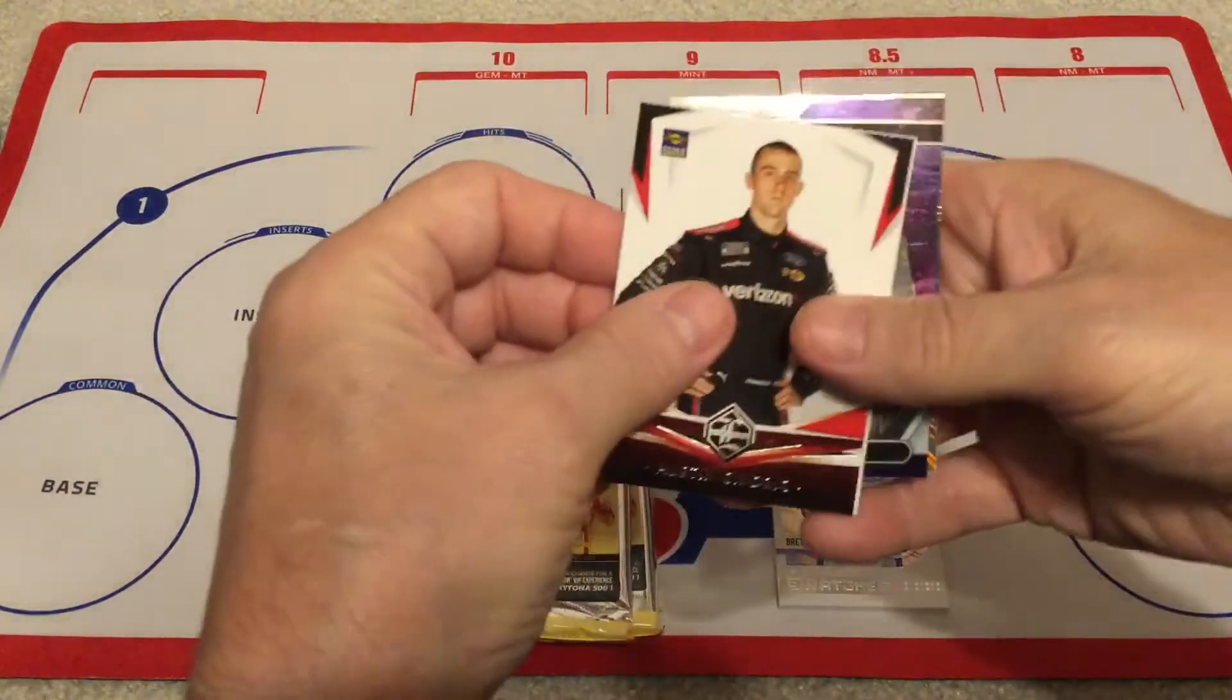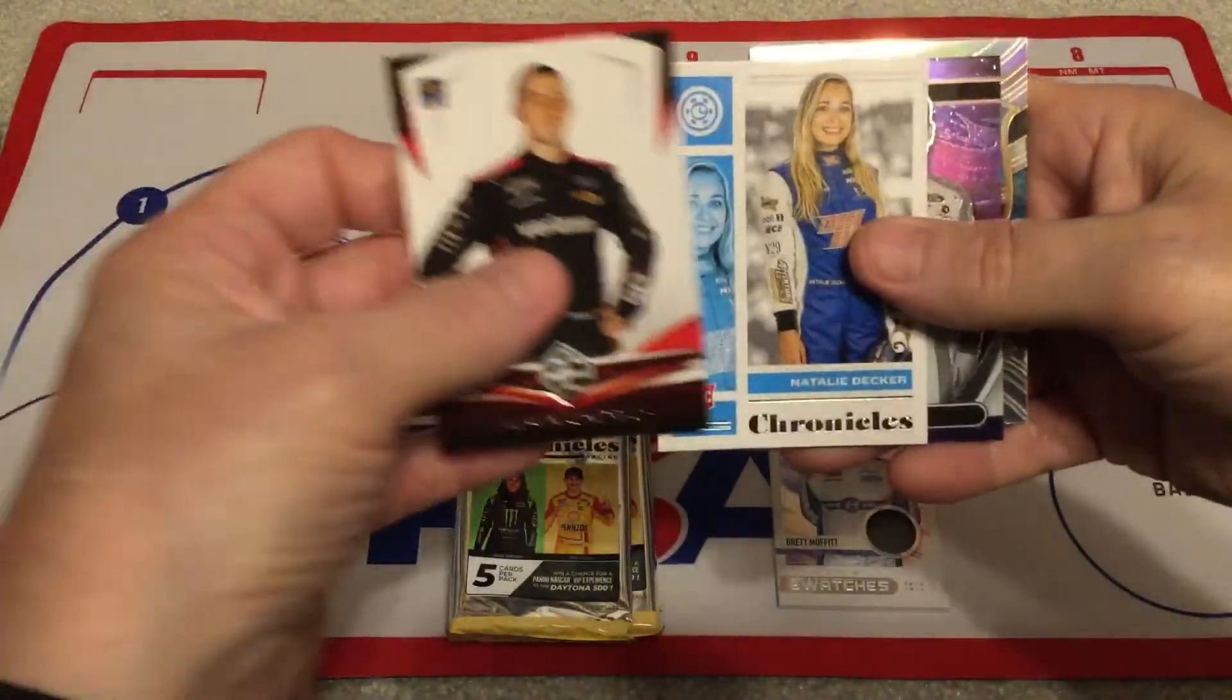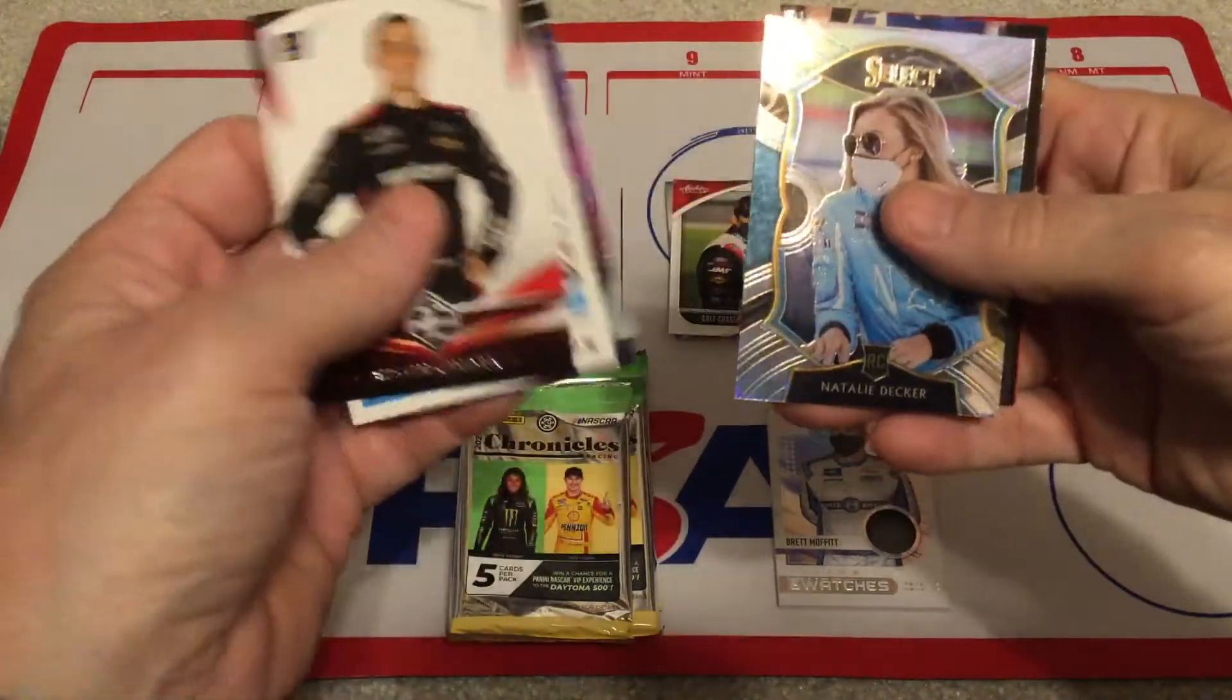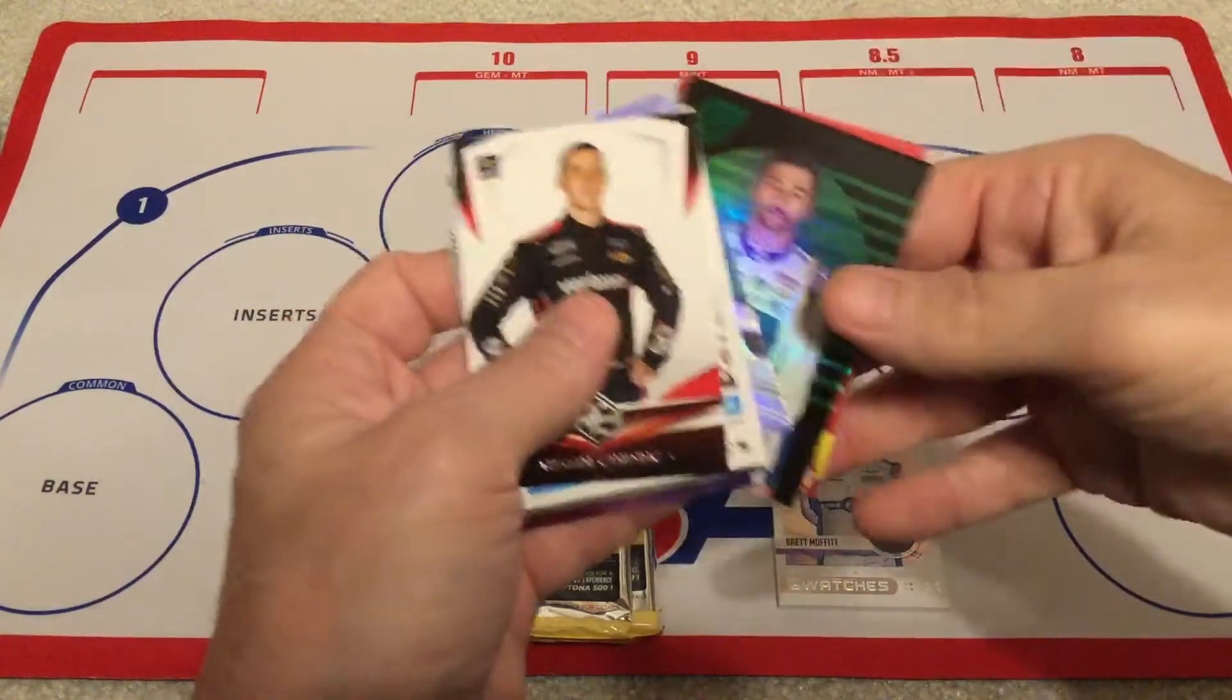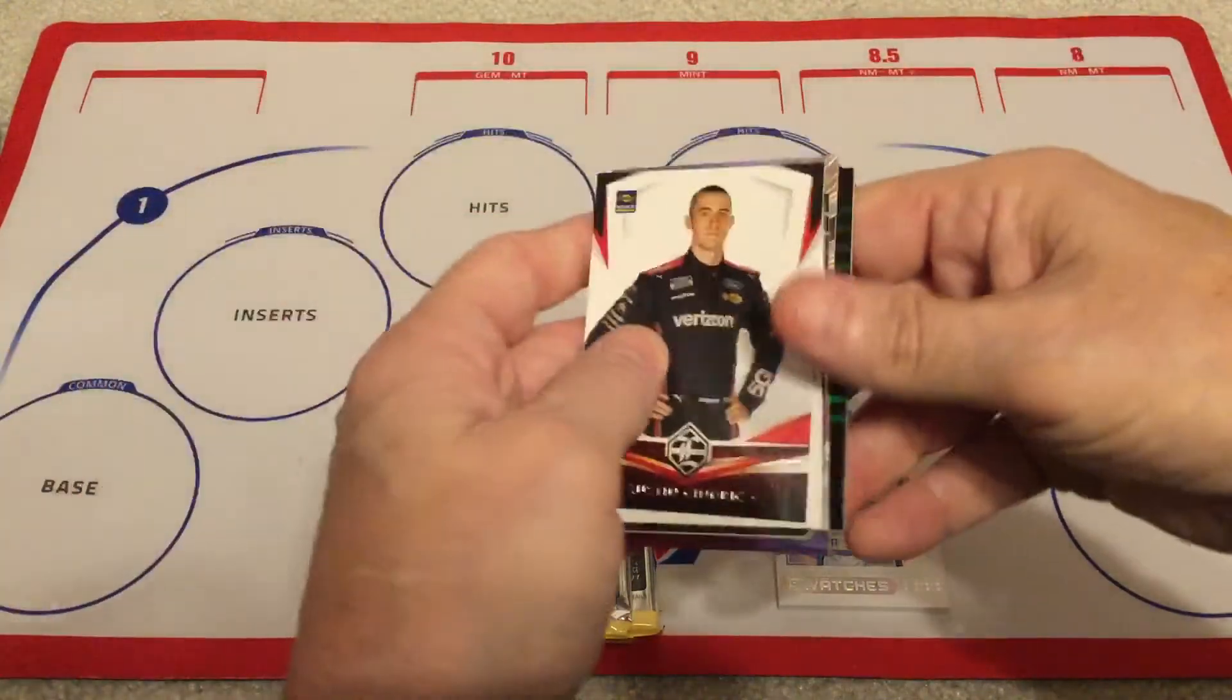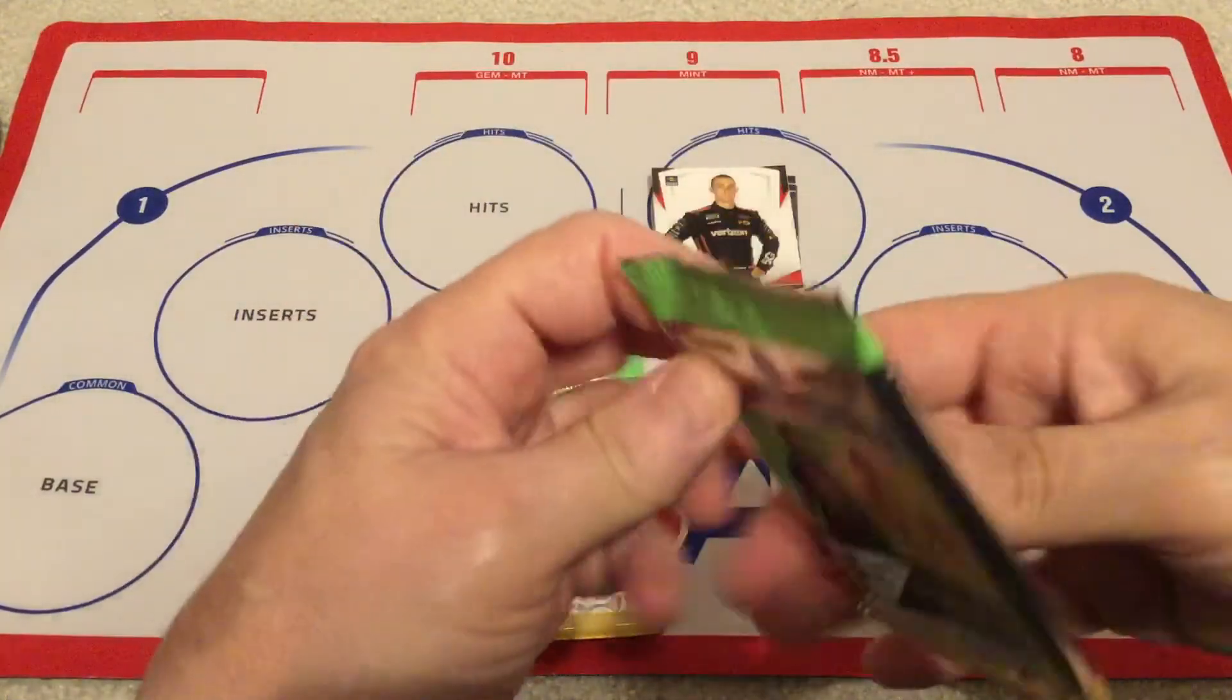All right. Pack number two. Got Austin Sendrick. There's Natalie Decker. There's Joey Logano and Titan. And another Natalie Decker. And a green Chase Elliott. Cool. All right. I like that. That's freaking awesome. All right. That was definitely a Natalie Decker pack. So, we've got two Natalie Deckers.